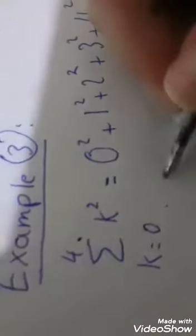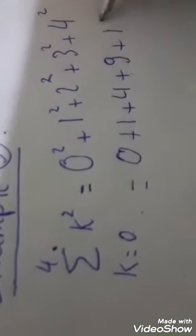Zero squared plus one squared plus two squared plus three squared plus four squared. Zero squared is zero, plus one, plus four, plus nine, plus sixteen, and the sum of these is thirty.